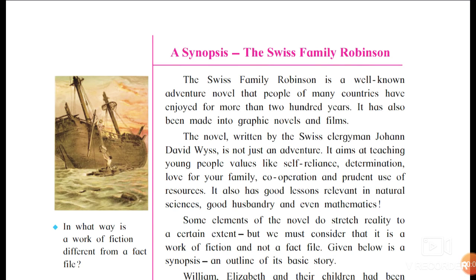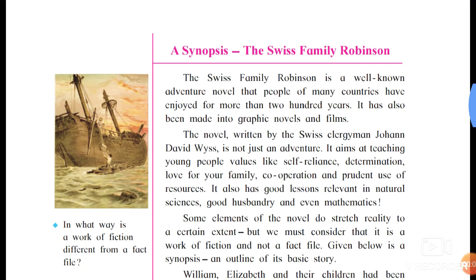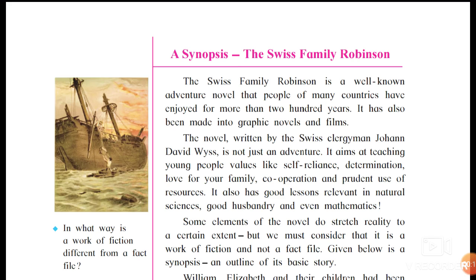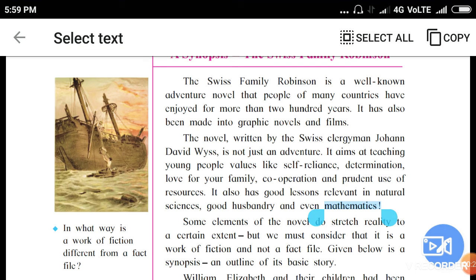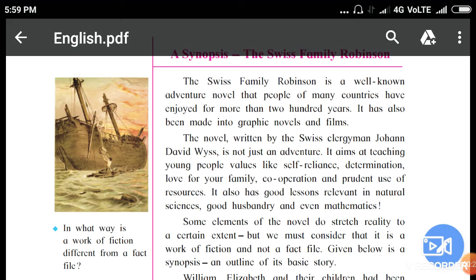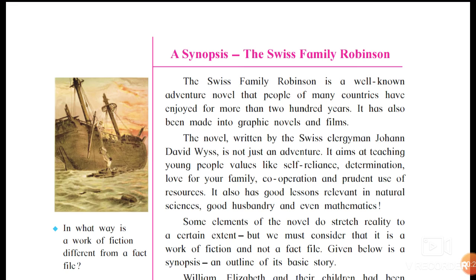Hi friends, welcome to Studies with John. Today's topic is English 9th standard, unit 1.2: a piece of fiction, 'The Swiss Family Robinson.' It is a very good novel and we will learn many nice values from it. Please like and subscribe my channel — it motivates me to make more videos.